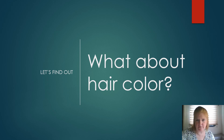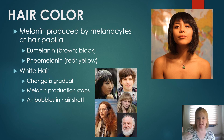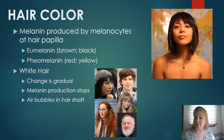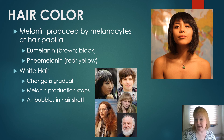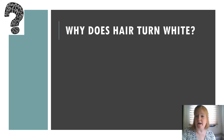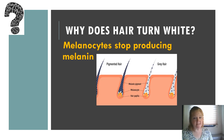Melanin produced by melanocytes at the hair papilla gives our hair its color. Eumelanin produces brown and black colors, while pheomelanin produces red and yellow colors. The type and amount of melanin determines your hair color. White hair typically results from melanin production stopping — the change is gradual, not all at once. It can also result from air bubbles forming in the hair shaft.